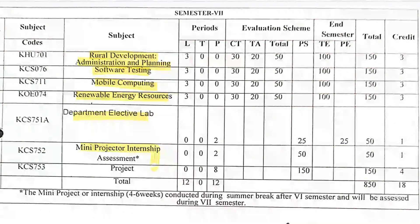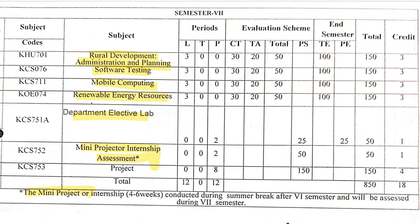You have to do a mini project or internship. After the 6th semester, you start the 7th semester and you have to do an internship for four to six months. After that, you have to submit a mini project in your 7th semester. This is going to be the structure of your 7th semester.